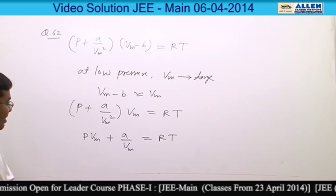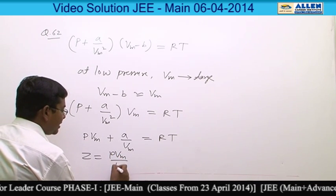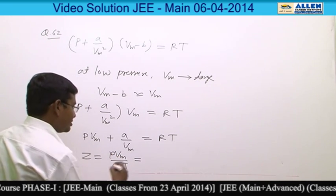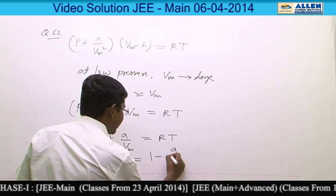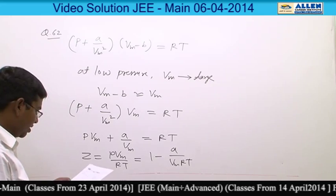But compressibility factor Z is equal to P Vm by RT. And that is from here 1 minus A by Vm RT. That is the answer is 4.